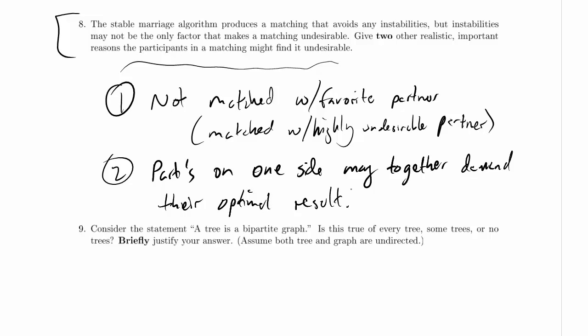So imagine, for example, we had in this exam a stable marriage problem in disguise where we had advisors and students and we were matching them up. Imagine, for example, that we did that with the stable marriage algorithm and that we had the advisors be proposers and the students were receiving proposals.